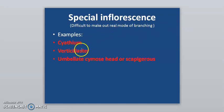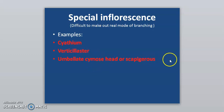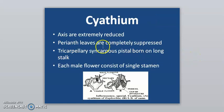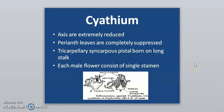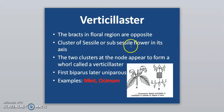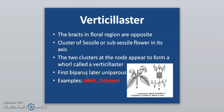Special types of inflorescence are called special because it is difficult to make out the real mode of branching. Example is cyathium — axes are extremely reduced, parent leaves are comparatively suppressed, tricholopolis, and pistils are borne on long stalks; each male flower consists of a single stamen. Example is Euphorbia. Verticillaster: the bracts in the floral region are opposite; clusters of sessile or subsessile flowers are in their axils; the two clusters at a node appear to form a whorl. It is first biparous and later becomes uniparous — example is mint and Ocimum.